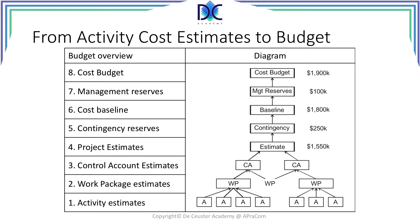How do we get from activity estimates to the total cost budget of the project? When we look at all those activities on the bottom, they are linked to work packages, and from the work packages we create control accounts. All the control accounts together give you the project estimate. What is still missing is the contingency budget to take into account the risk effects, and that gives you your project baseline.